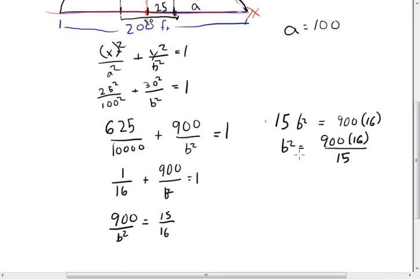So, now we can simplify that out. 900 times 16 divided by 15 is equal to 960. So, b is equal to the square root of 960, which is 30.983.